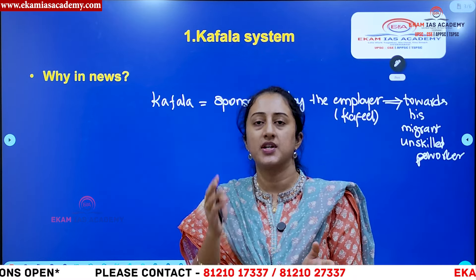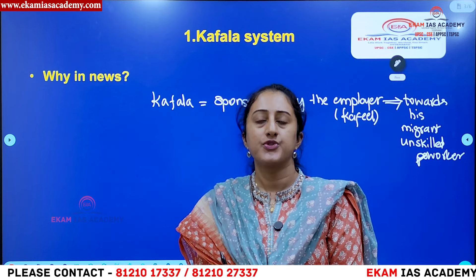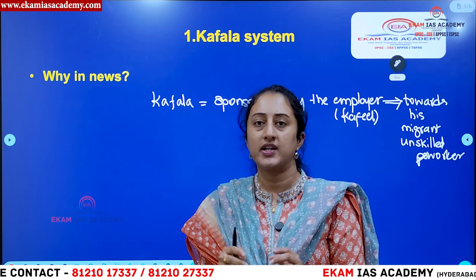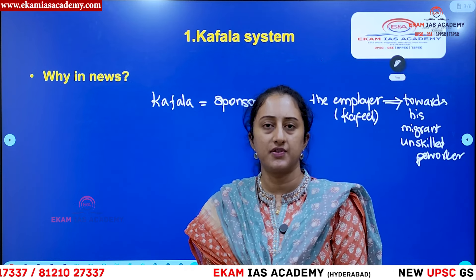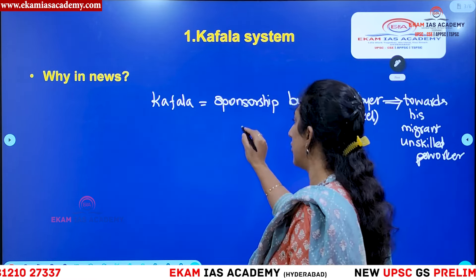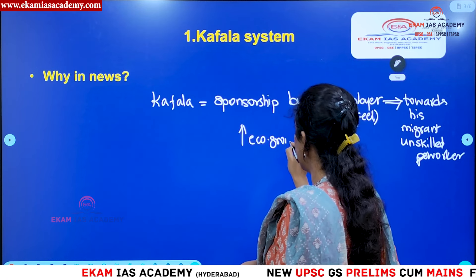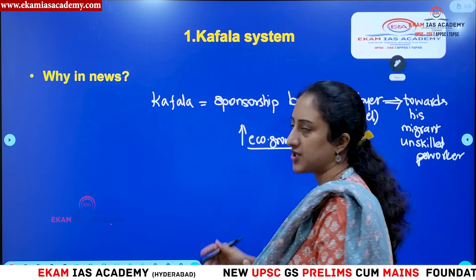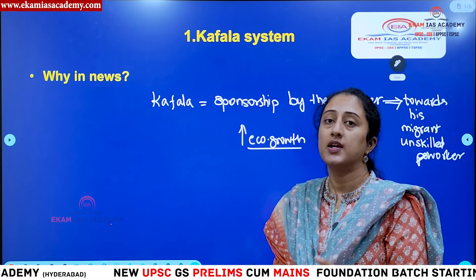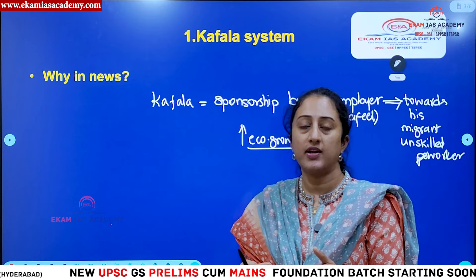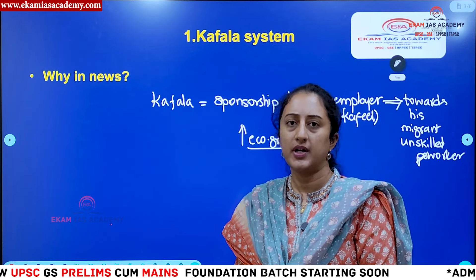Under the kafala system, the person giving employment has to sponsor his worker. These Gulf countries like Saudi Arabia, UAE, Bahrain, and Kuwait introduced this system because they wanted economic growth. When there is a demand for labor, to ensure a cheap supply they introduced a sponsorship system. Through agencies they hire foreign unskilled workers to stimulate their economic growth through different activities.